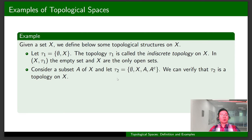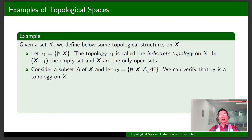In the second example, we consider a subset A of X and define τ₂ by this formula. So τ₂ contains the empty set, X, A, and the complement of A. We can prove that τ₂ is in fact a topology on X. In this topological space, the empty set, X, A, and the complement of A are the only open sets. At home, you can show that these are the only closed sets in this topological space.